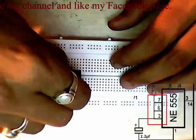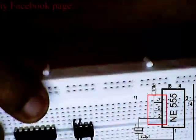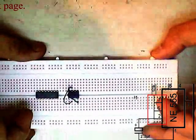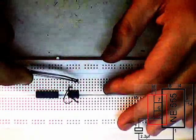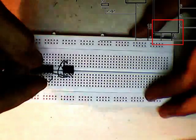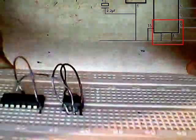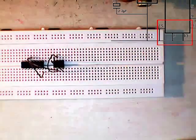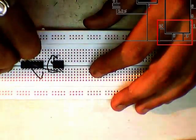Connecting pin 2 and pin 7 of the timer IC. Connecting pin 7 and pin 6 of the timer IC. Connecting pin 3 of the timer IC and pin 14 of the CD4017 IC. Connecting pin 8 and pin 13 of the CD4017 IC. Connecting pin 15 and pin 13 of the CD4017 IC.